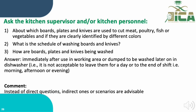For the staff interview portion of E.2.7, we ask the kitchen supervisor and kitchen personnel about the boards, plates, and knives used for cutting meat, fish, or vegetables and how they identify each by color. We ask about the washing schedule and how items are washed — the answer must be immediately after use. Instead of direct questions, we use scenarios to obtain answers, and based on their responses, we evaluate and score the sub-element.